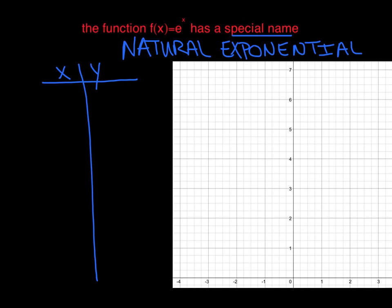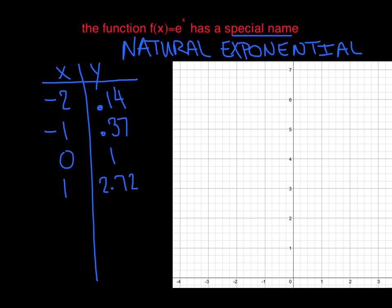On your calculator, go to Y= and enter E raised to the x. Go to the table of values. I'm starting with x = -2, which gives me 0.14. Negative 1 gives 0.37. Zero gives 1. One gives 2.718, rounded to 2.72. Two gives 7.39. And the next point gives 20.09 — that's going to be a tough one to squeeze on there. Let's go ahead and plot these points.